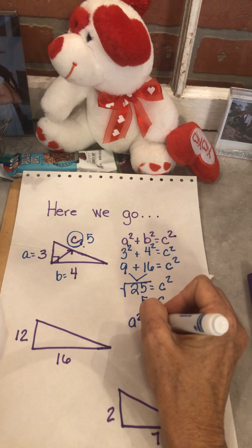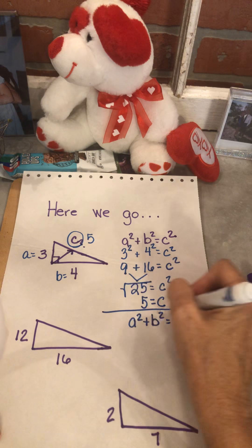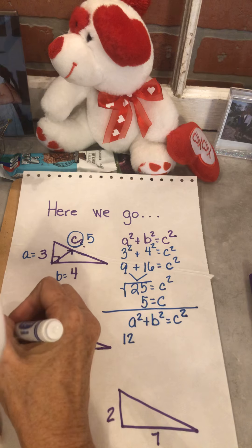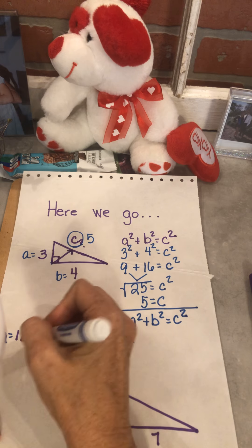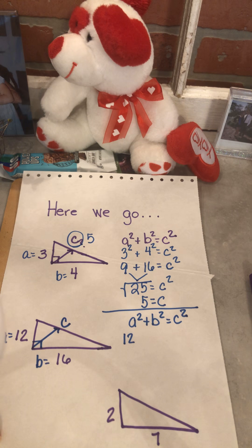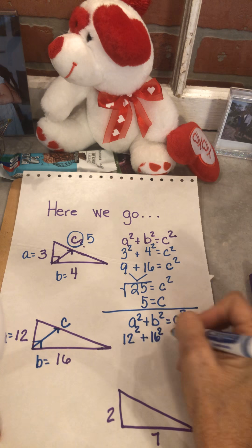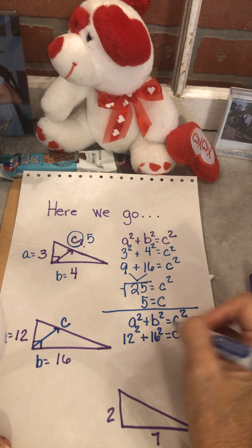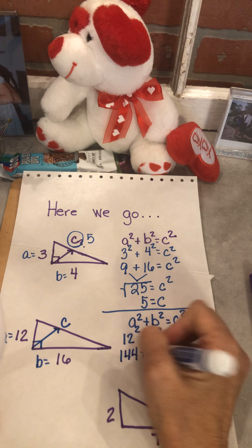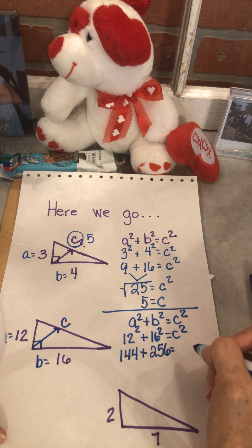I believe you should always write your formula. So I'm going to write that first. Okay, a squared is, I mean, let's label it. This is a, this is b. Across from the right angle is c. So a is 12 squared, b is 16 squared, equals c squared. Well, 12 times 12 is 144, and 16 times 16, and yes, you absolutely can use a calculator for this, is 256.